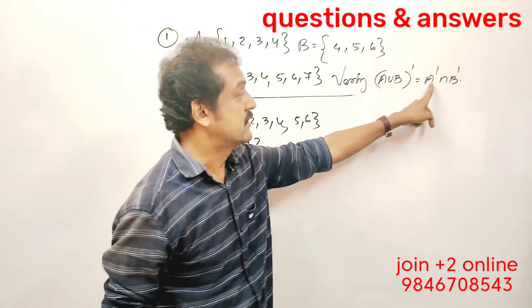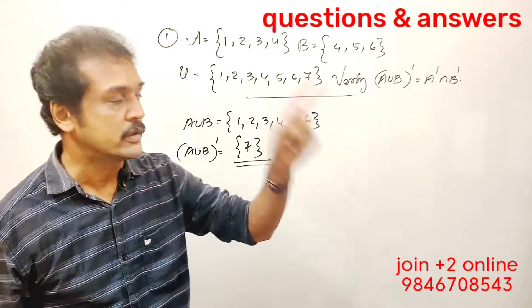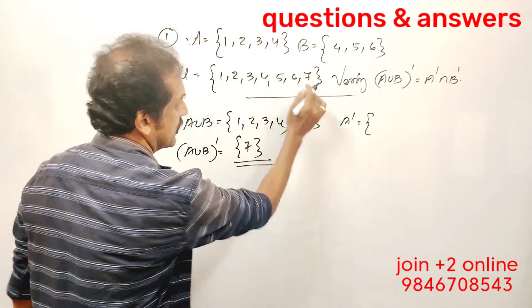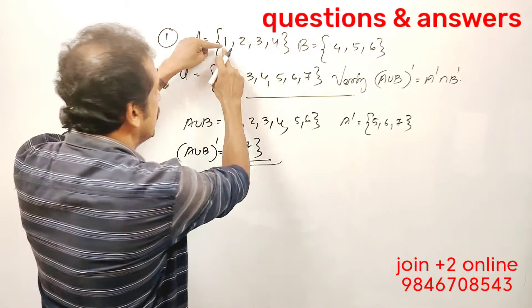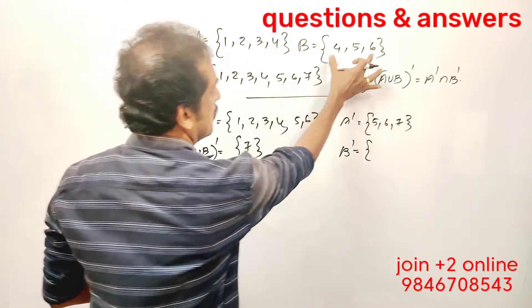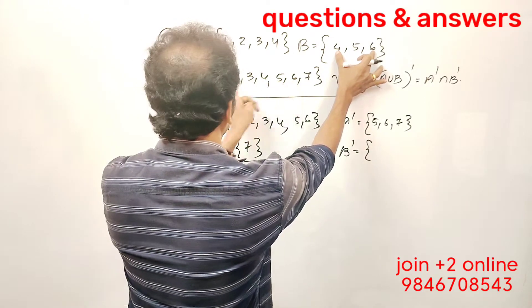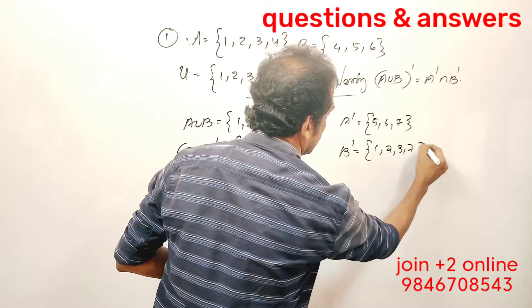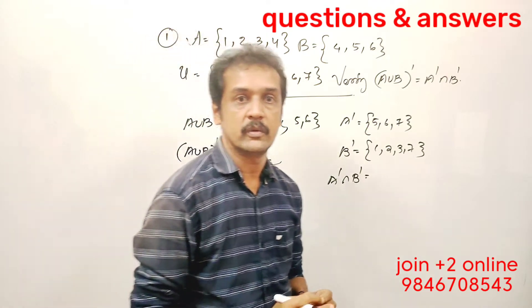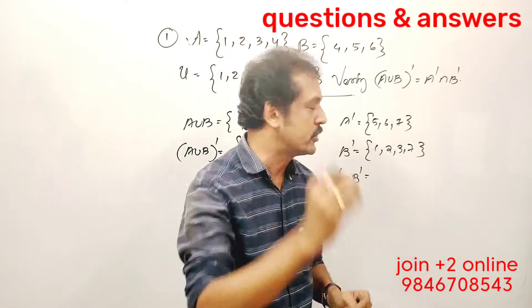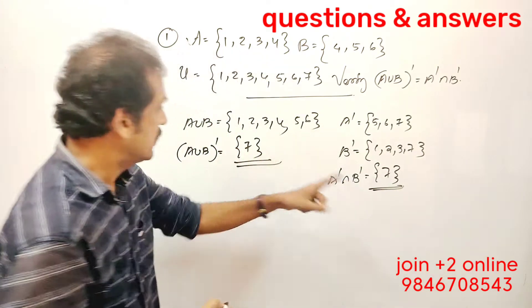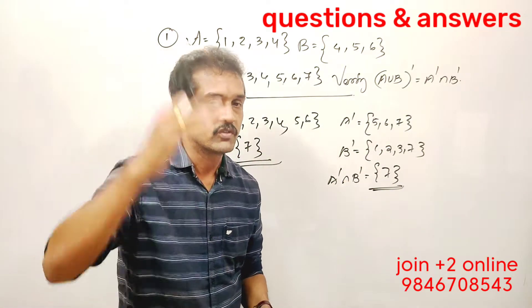Now let's find the right-hand side. A complement is {2, 3, 5, 6, 7} and B complement is {1, 2, 3, 7}. A complement intersection B complement gives us {7}. The result is verified. First question is over.